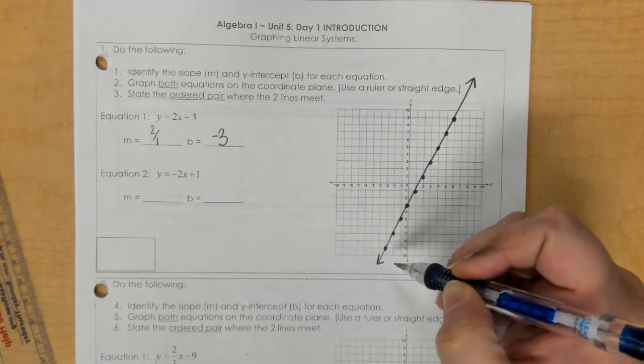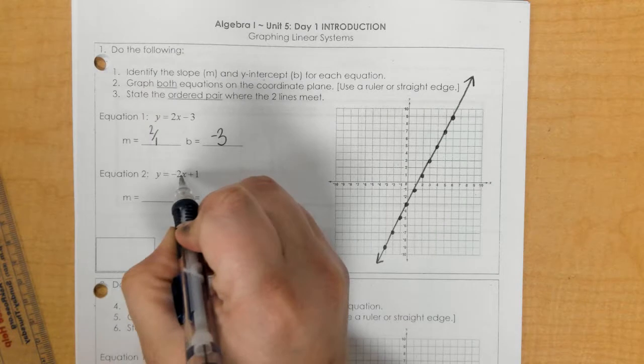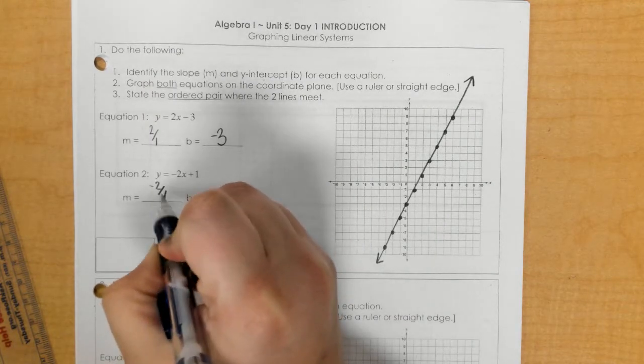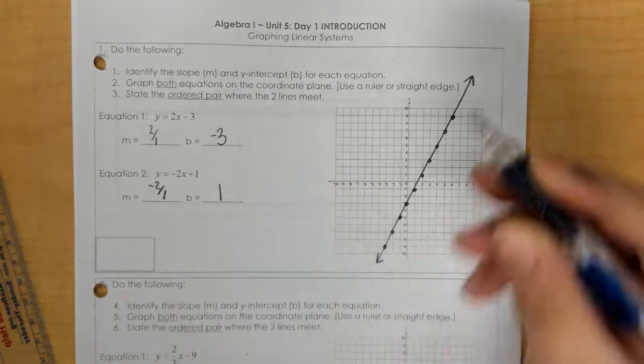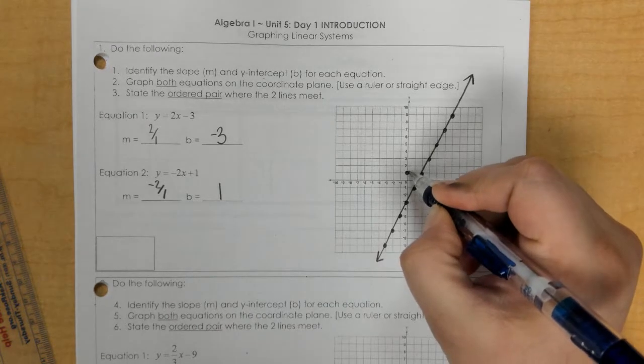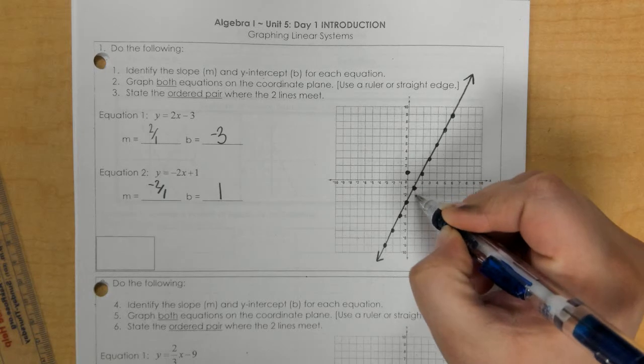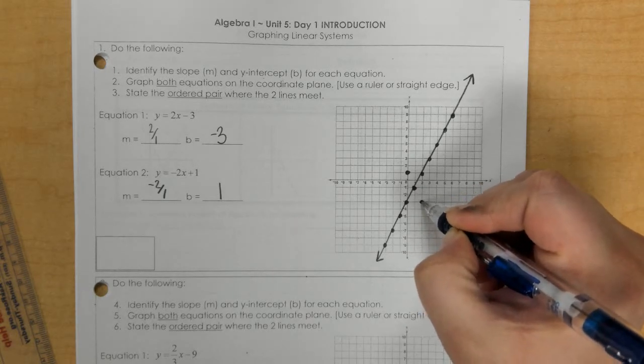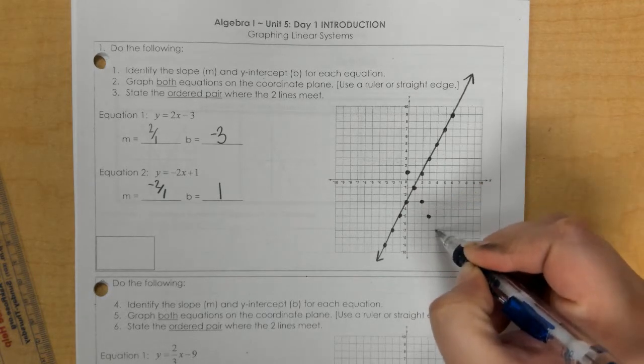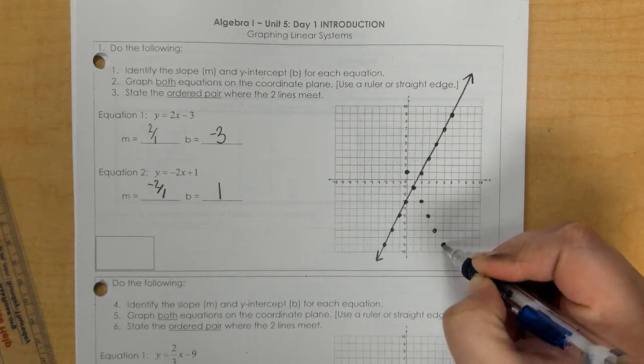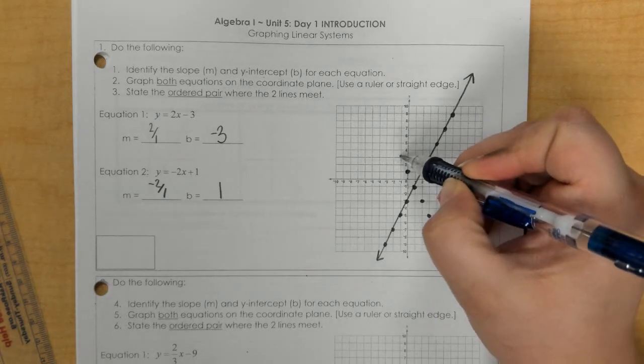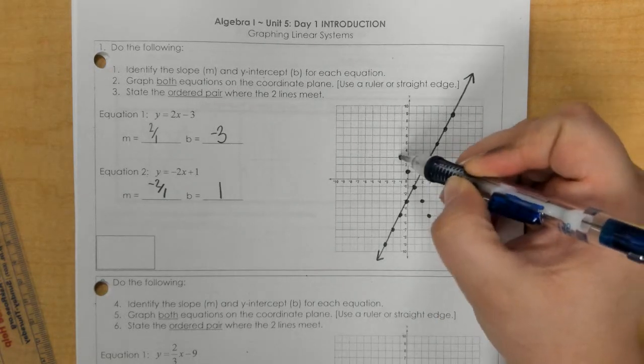In equation 2, our slope is negative 2 over 1. And our b is 1. So we begin at 1. And we are going to fall 2, run to the right 1. And again, we are going to keep doing that. We also could rise 2 and go left 1.